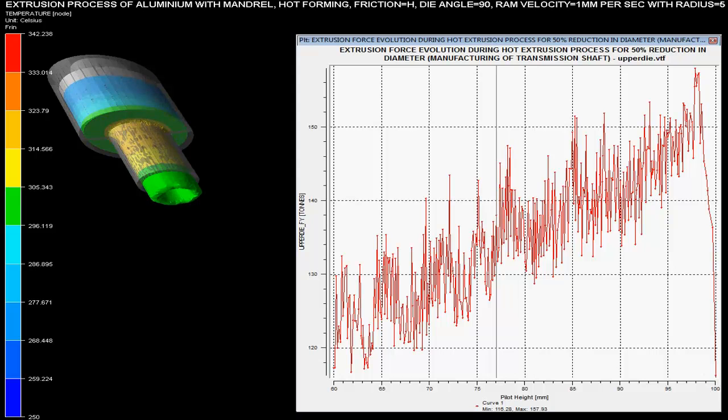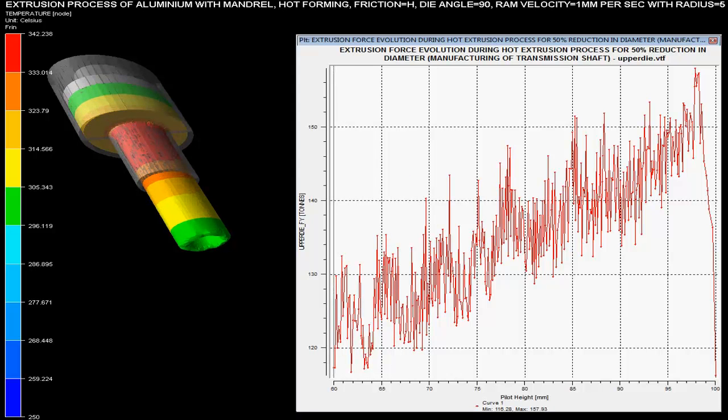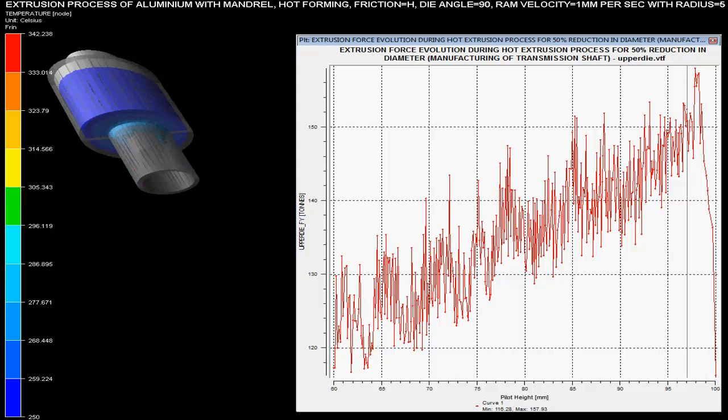Ram velocity is set as 1 mm per second with a radius of 5 mm. The die angle is specified at 90 degrees and there is medium friction during this cold extrusion process.